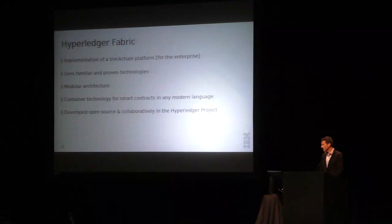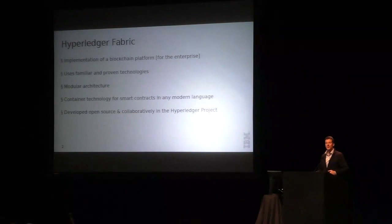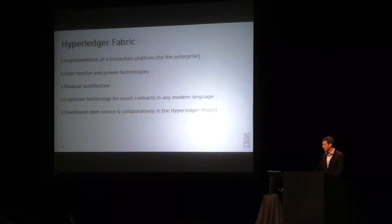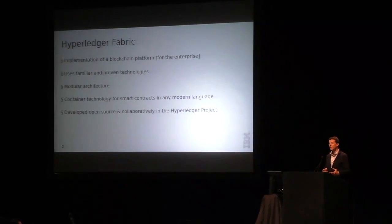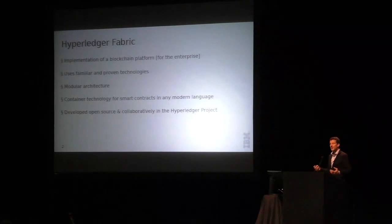I'm glad to count on the help of such a big team. As a preview: Hyperledger Fabric is one blockchain technology platform being developed inside the Hyperledger project. It implements blockchain technology with an enterprise focus — meaning it's a permissioned blockchain model. It uses a modular architecture and contains container technology for running smart contracts, which are generalizations of cryptocurrencies. It is developed open source, and I'll show you how to participate later.